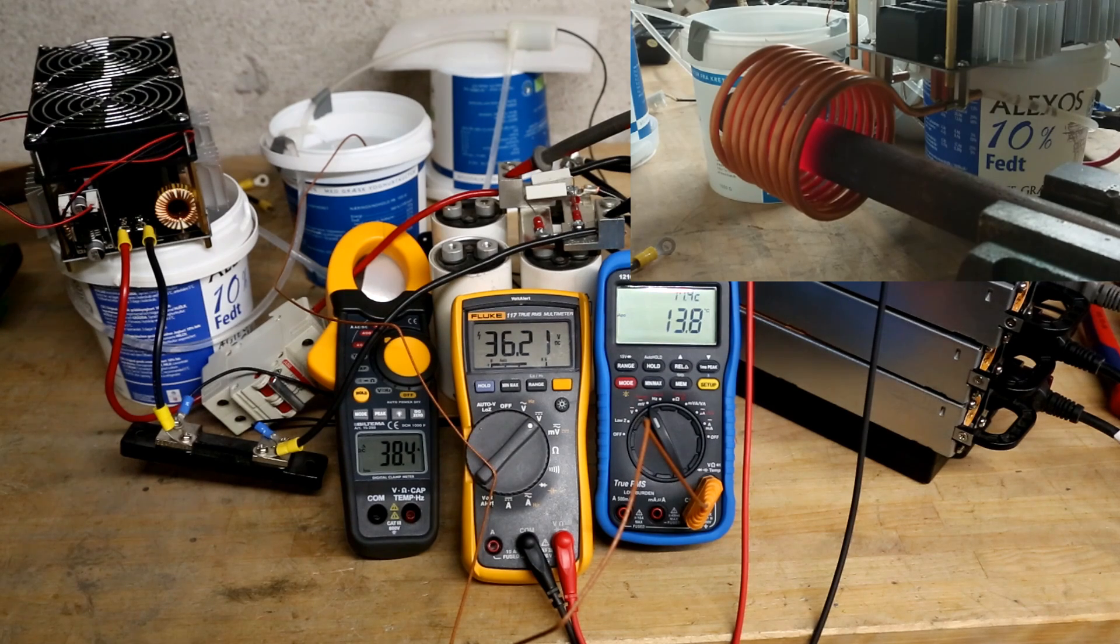So we can see as the pipe heats up now, we can see the current dropping down again. So we had just a roughly 40A peak and now it's falling back to around 30A again.